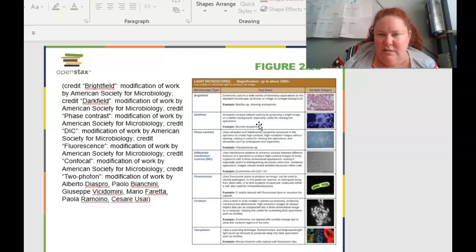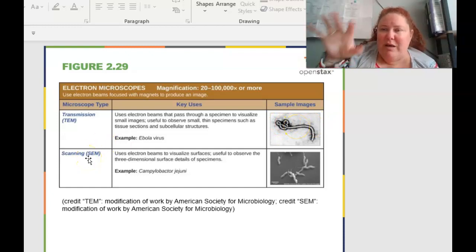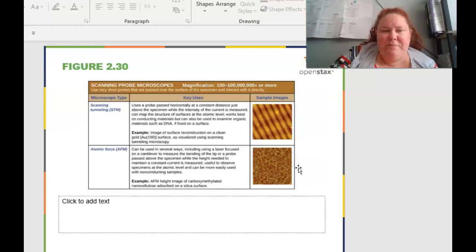So here are some images of the different types of microscopy that you can get. Light field, dark field, phase contrast, differential, fluorescence, confocal, and two-phase. So you can see the key uses of things and then some different images. So you can see how detailed things are. And then the different magnifications, transmission transmits light through. And so you're going to be able to see the internal structures where scanning is bounced off. And so that's going to be more surface. Scanning tunneling is the STEM that we just talked about where atomic force is more of the details as well.